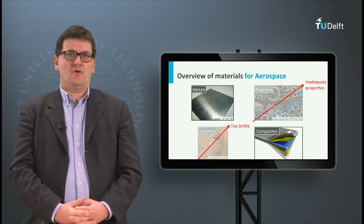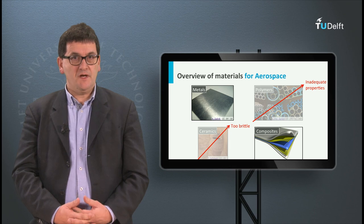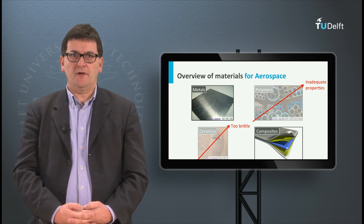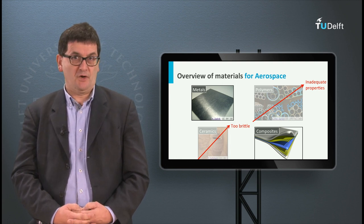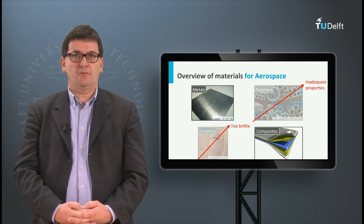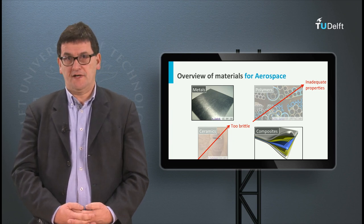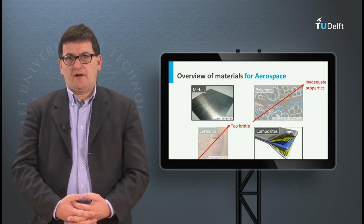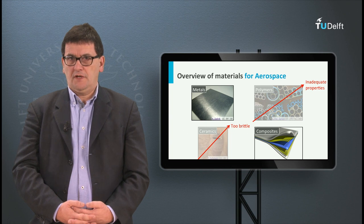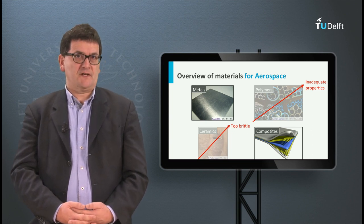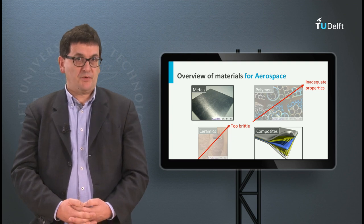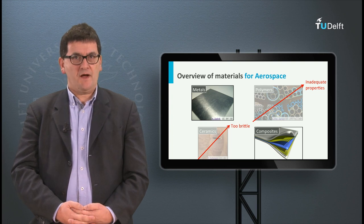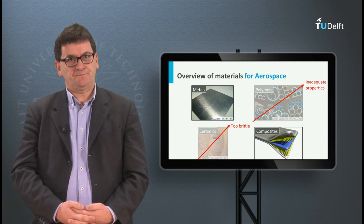If we look at the basic properties of these four main material categories, only metals and composites are used in aerospace applications. However, one ingredient in composites is a polymer, but as a pure material a polymer does not have sufficient mechanical properties to use it in high performance structures. Ceramics on the other hand are strong and stiff enough, but they don't have any flexibility and deformability. Think about pottery — if you drop a vase, the vase will break in many pieces without noticeable deformations. It is brittle.